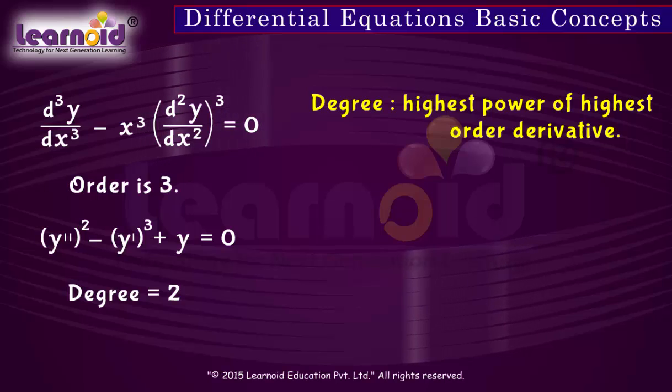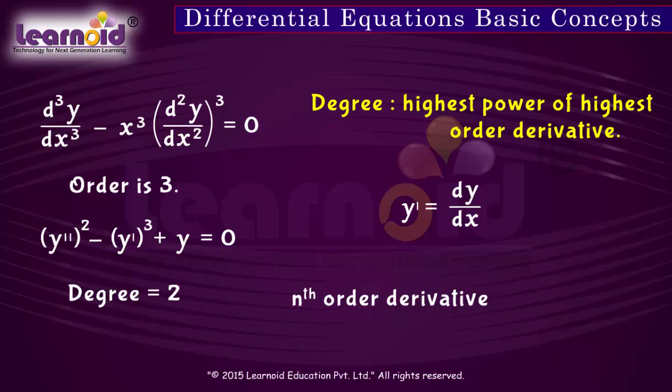Higher order derivatives can be written as y with super suffix. For example, nth order derivative of y with respect to x can be written as d to the power n y by dx to the power n is equal to yn.